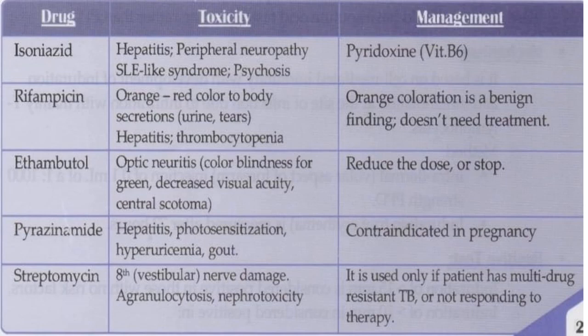Isoniazid should always be started with vitamin B6 (pyridoxine) to prevent deficiency symptoms such as peripheral neuropathy, stomatitis, glossitis, cheilosis, and convulsions. Toxicity of isoniazid includes hepatitis, peripheral neuropathy, SLE-like syndrome, and psychosis.